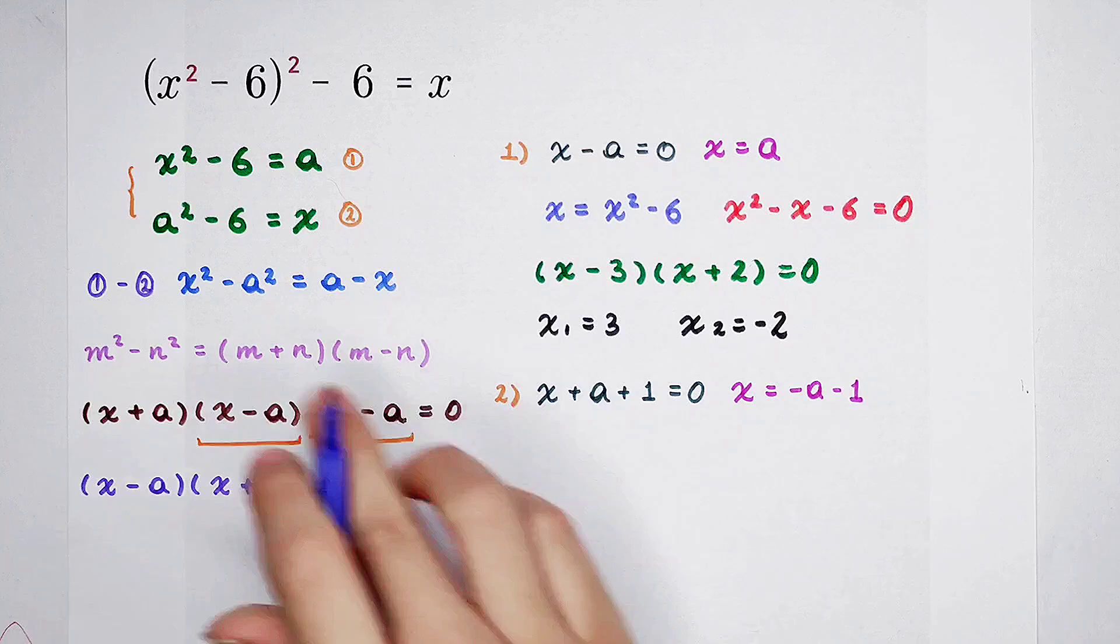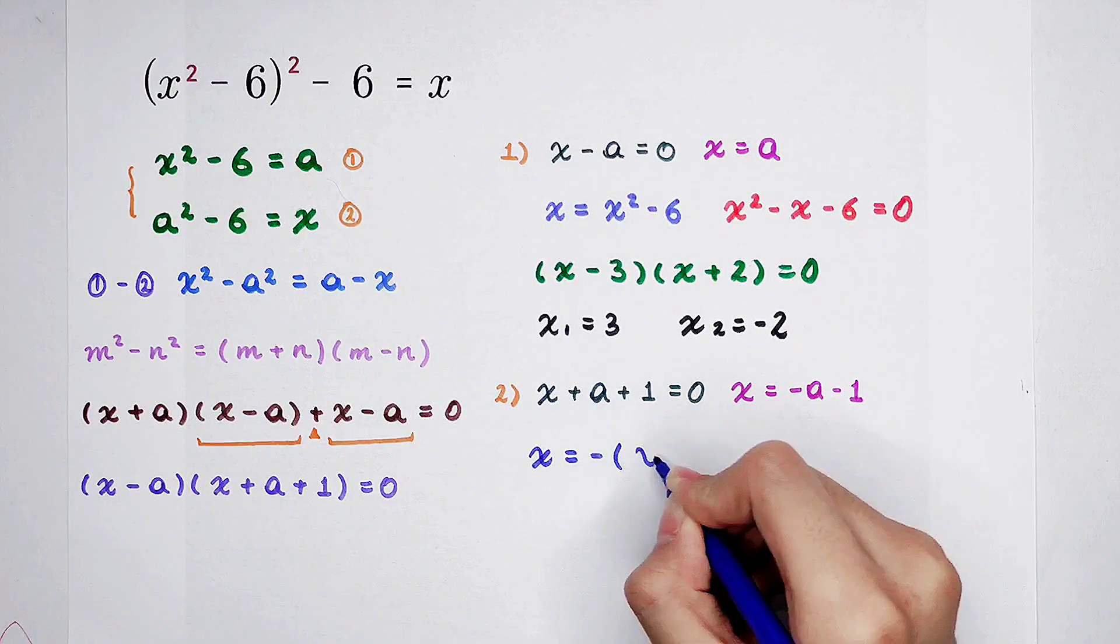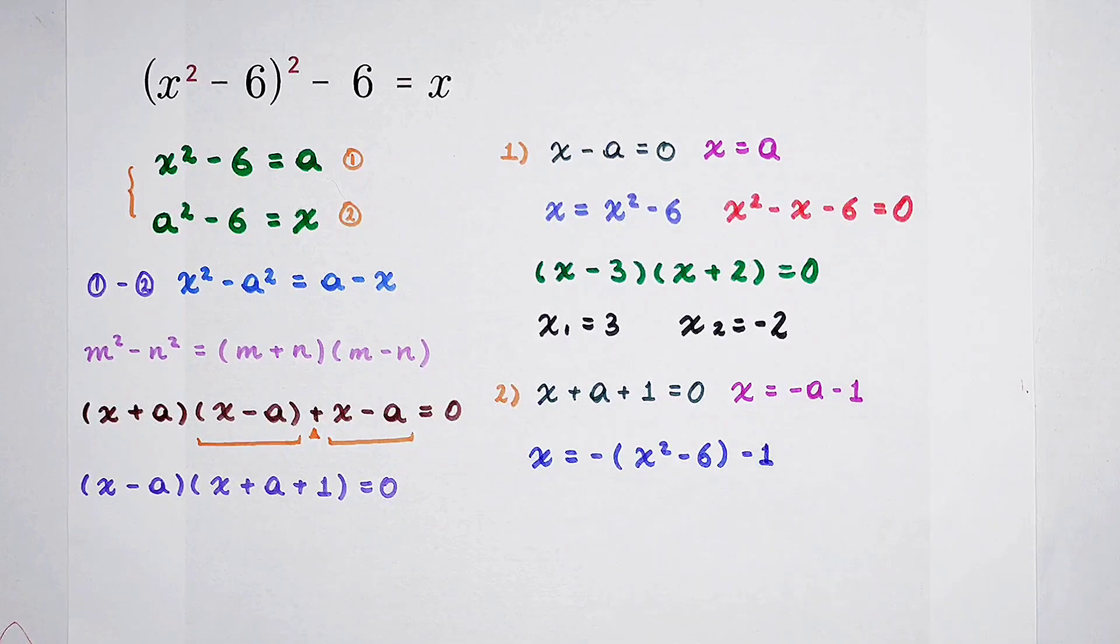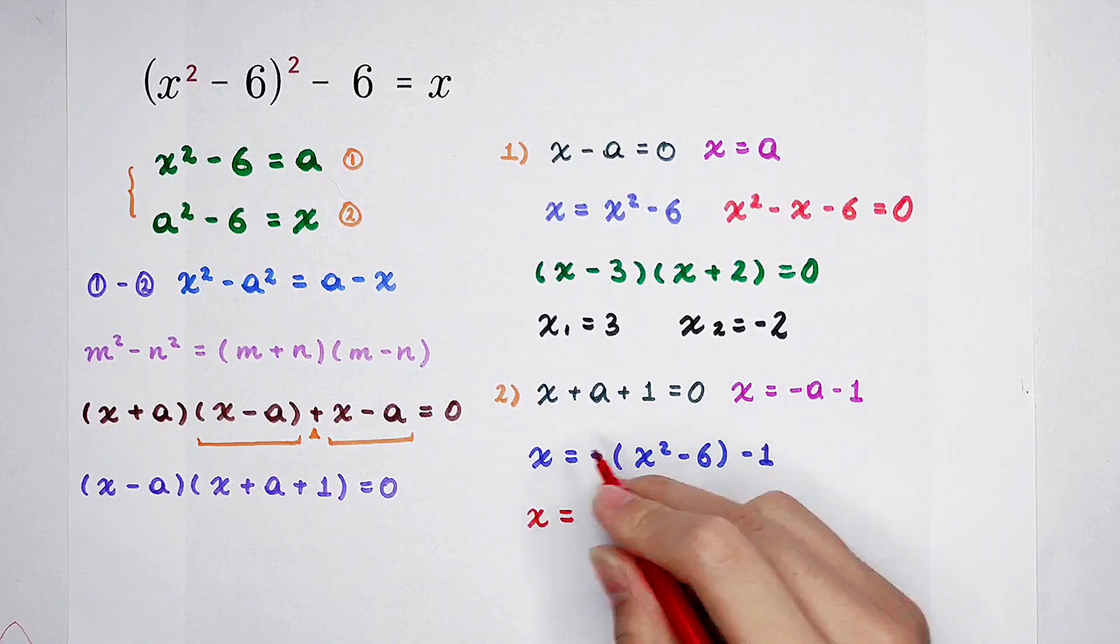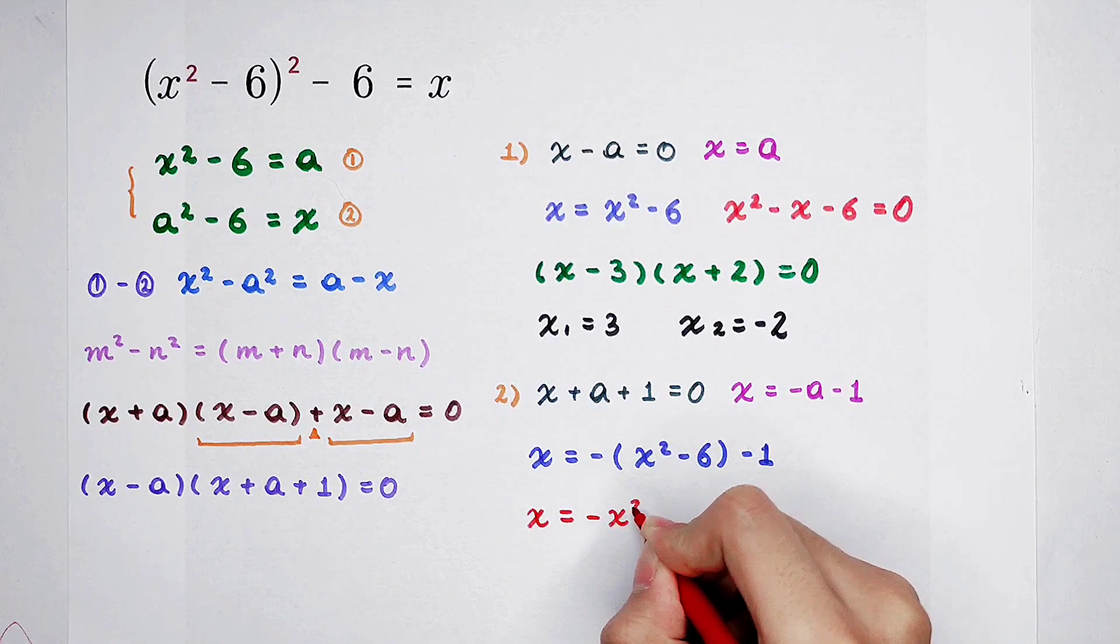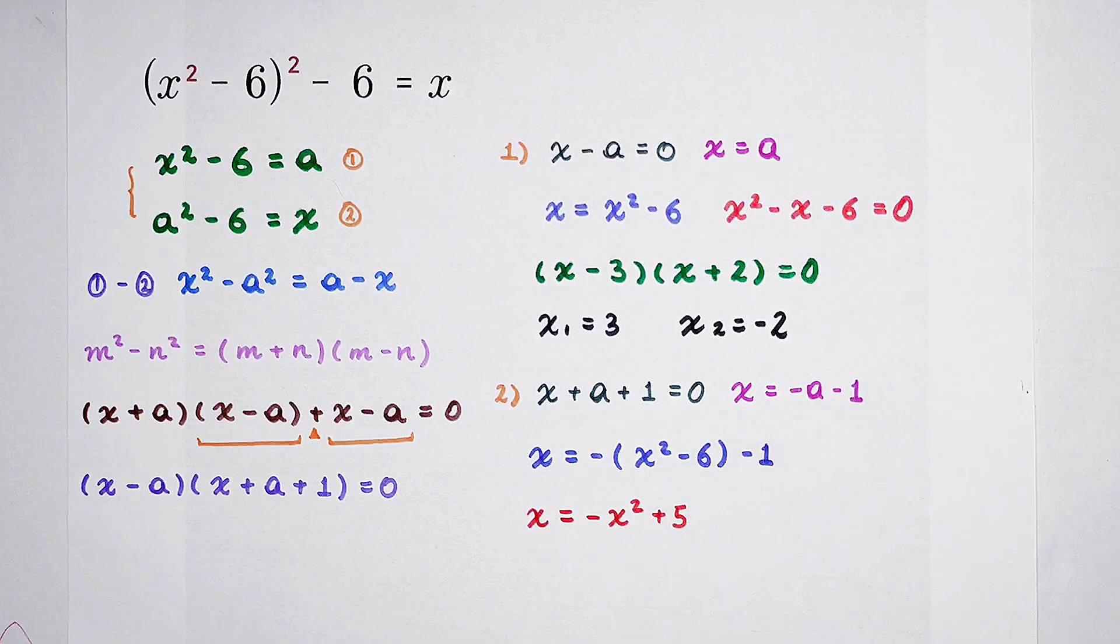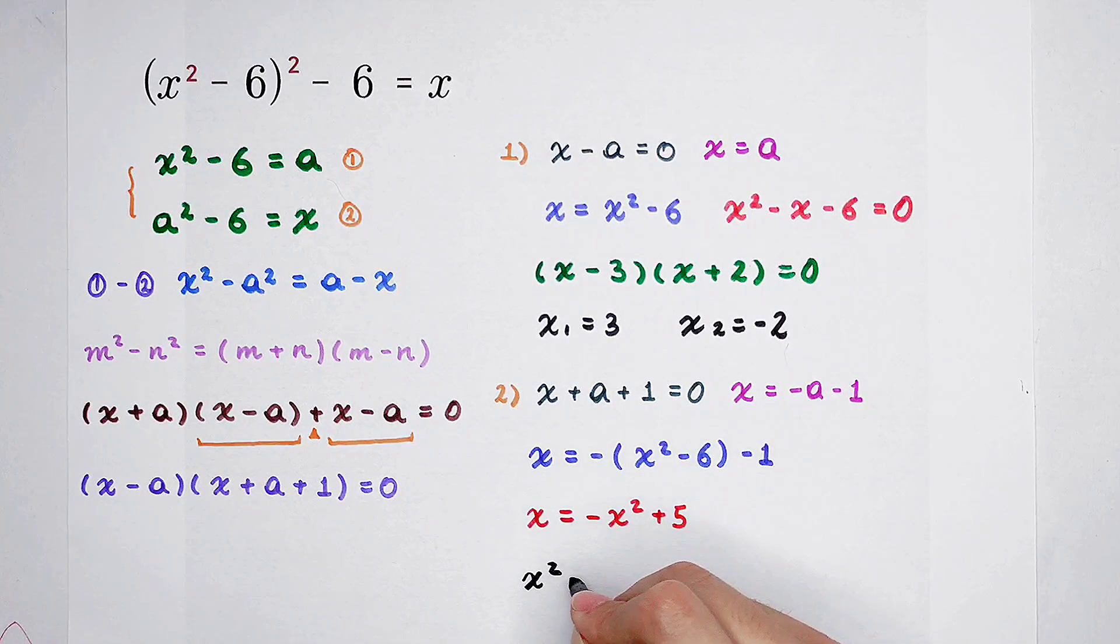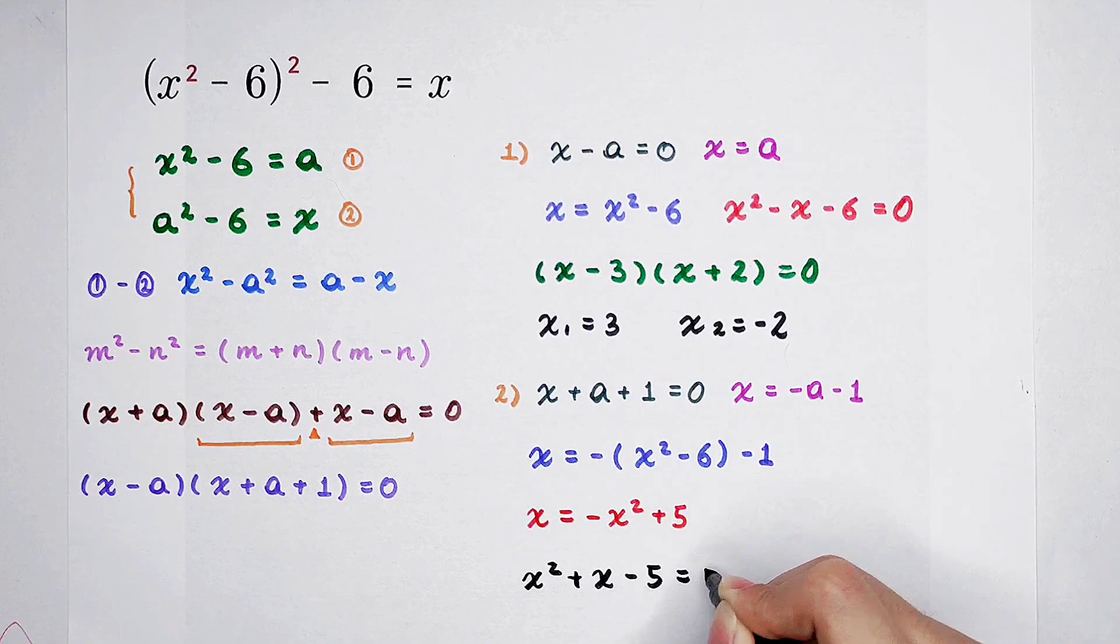A is x squared minus 6. So x is equal to negative x squared minus 6, and then negative 1. Of course, here is x is equal to negative x squared plus 6, then minus 1 is plus 5. x squared plus x minus 5 is zero.